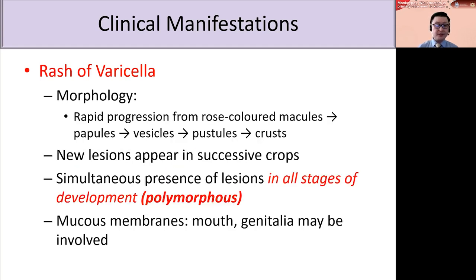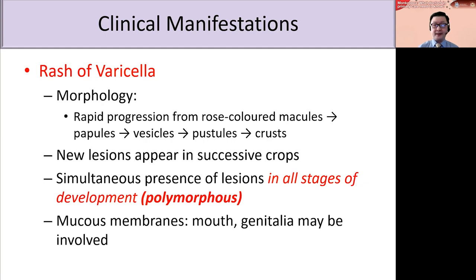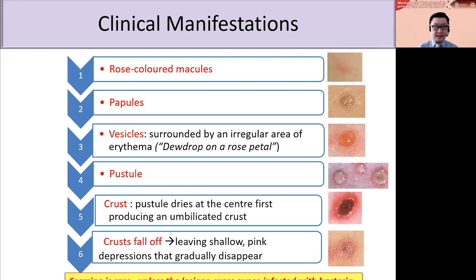In varicella zoster or chickenpox, the rash undergoes morphological change. Initially it presents with rose-colored macules, then evolves to form papules, then vesicles, pustules, and crusts — something quite similar to monkeypox. However, in chickenpox, the lesions typically appear in crops, and each crop will go through the morphological evolution. Hence, at any point in time when you examine the patient, there will be simultaneous presence of lesions at all stages of development — what we call a polymorphous condition, as compared to the monomorphous condition in monkeypox.